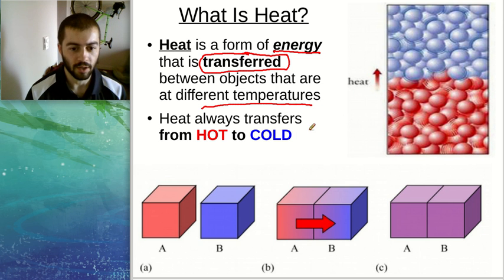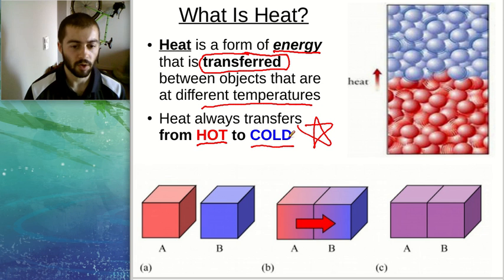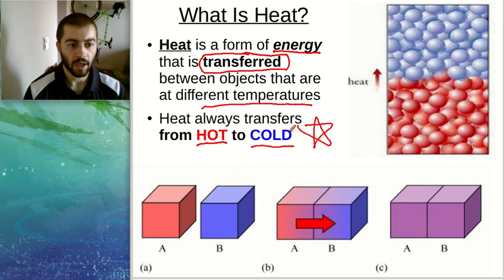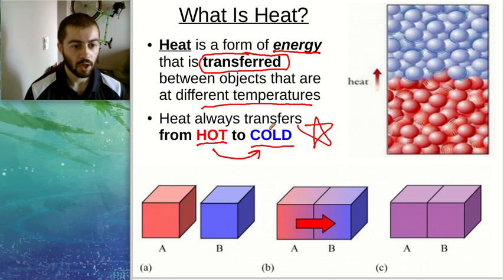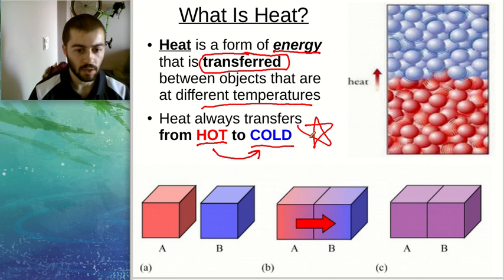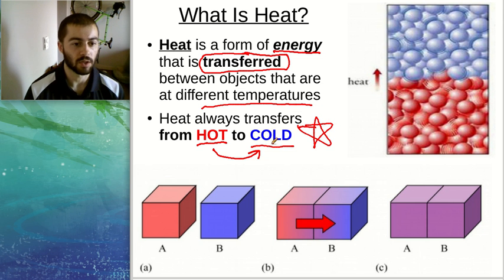Heat always transfers from the hot object to the cold object — this is super critical. So when you're outside in the winter and touch something cold and your hand feels cold, that's not cold transferring into your hand. It's really the heat leaving your hand and going into the object you touched. Heat always goes from hot to cold, not the other way around.